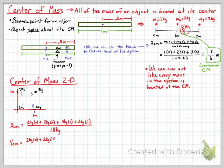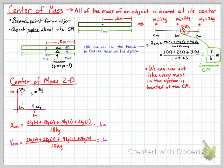For the center of mass position in the y direction: object 1 has no displacement in y; object 2 has 2 kg times 1 meter up; object 3 is 4 kg times 1 meter in the y direction; and object 4 is on the x-axis, so 2 kg times 0. Divide by the total effective mass, and we get a coordinate for the center of mass of this two-dimensional system.